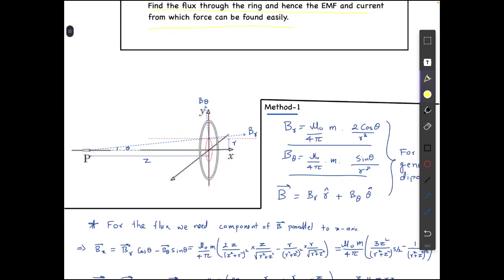Let's assume that the magnetic dipole is at P and the distance between P and the ring is Z. The radius of the ring is capital R. Let's consider a point in the plane of the ring which is at a distance of small r from the axis. The magnetic field due to the dipole at this point can be shown in two components, one is the radial component and one is the B theta.